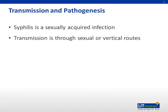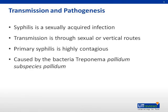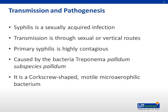Syphilis is transmitted via sexual and vertical routes. It is most contagious to sex partners during the primary and secondary stages. The etiological agent is Treponema pallidum, subspecies pallidum. It is a corkscrew-shaped, motile, microaerophilic bacterium.